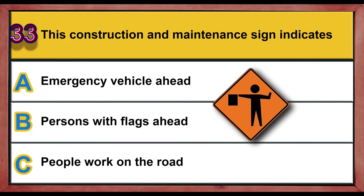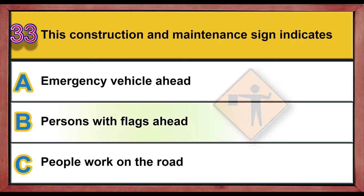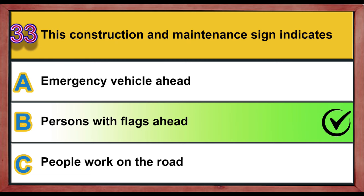Question 33. This construction and maintenance sign indicates: A. Emergency vehicle ahead. B. Persons with flags ahead. C. People work on the road. Correct answer is B: Persons with flags ahead.